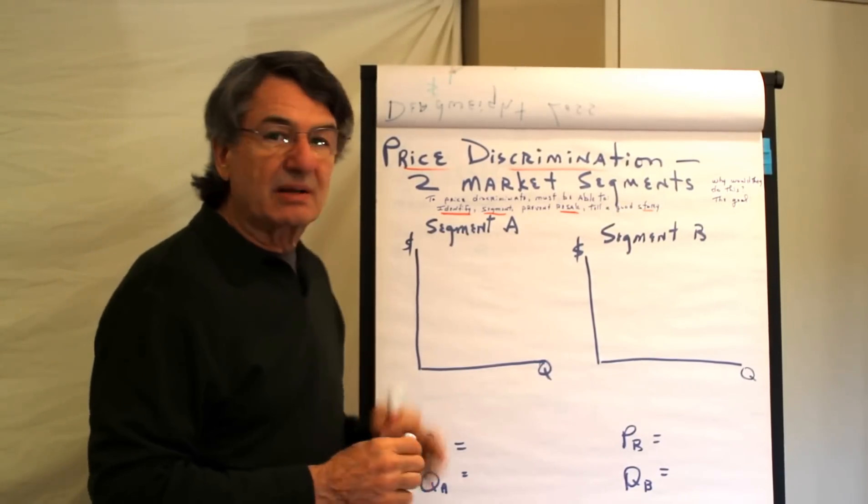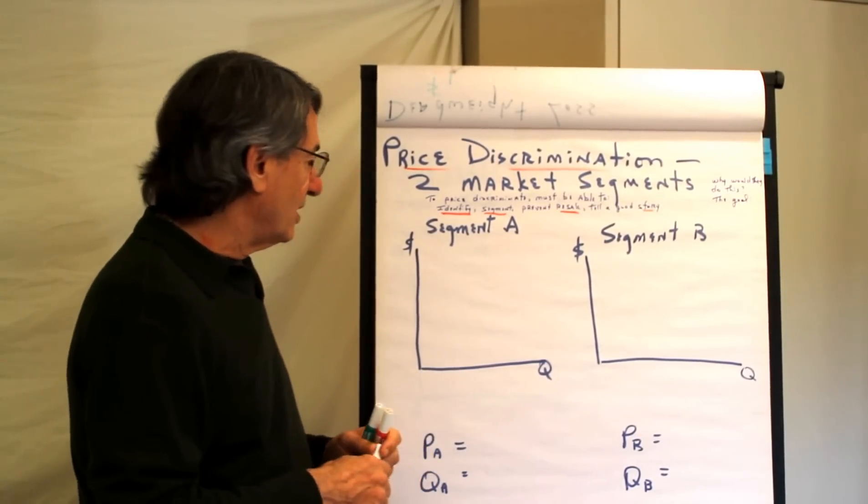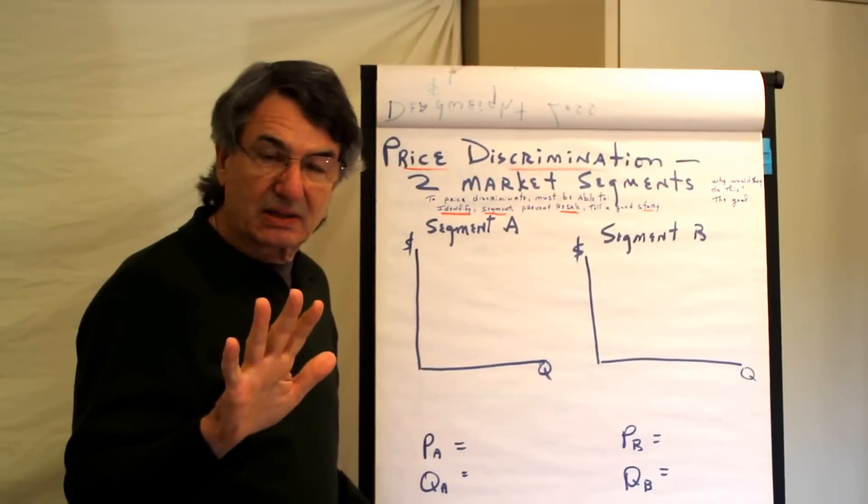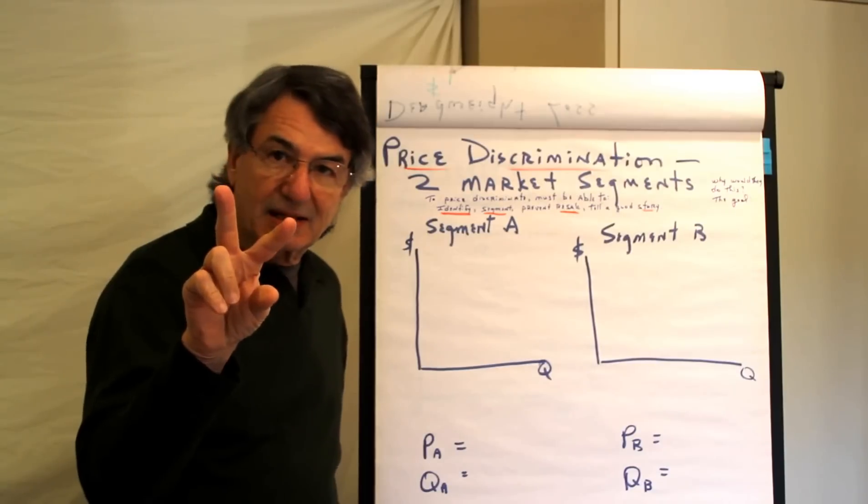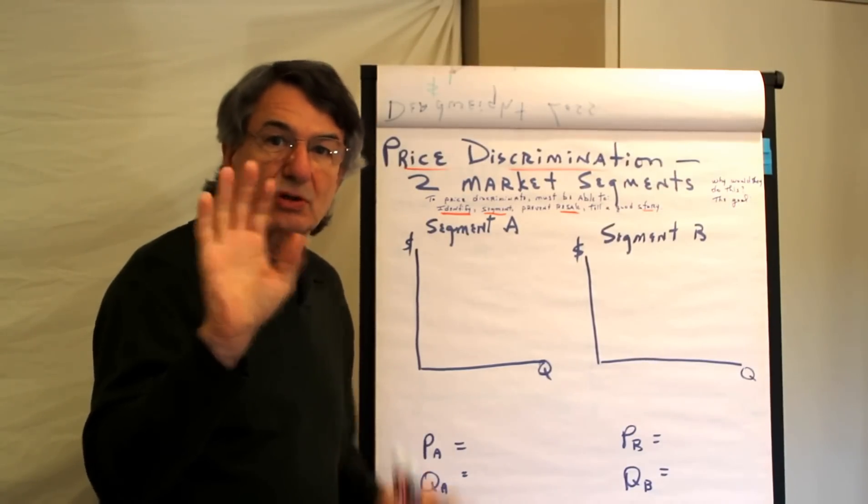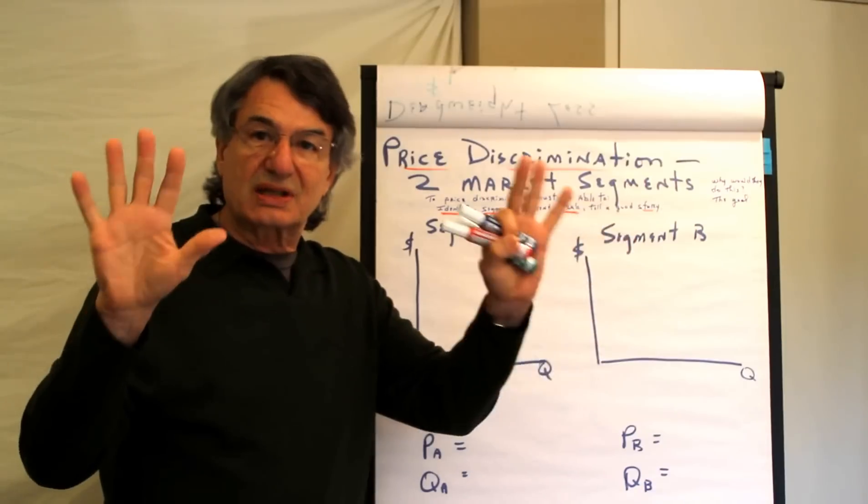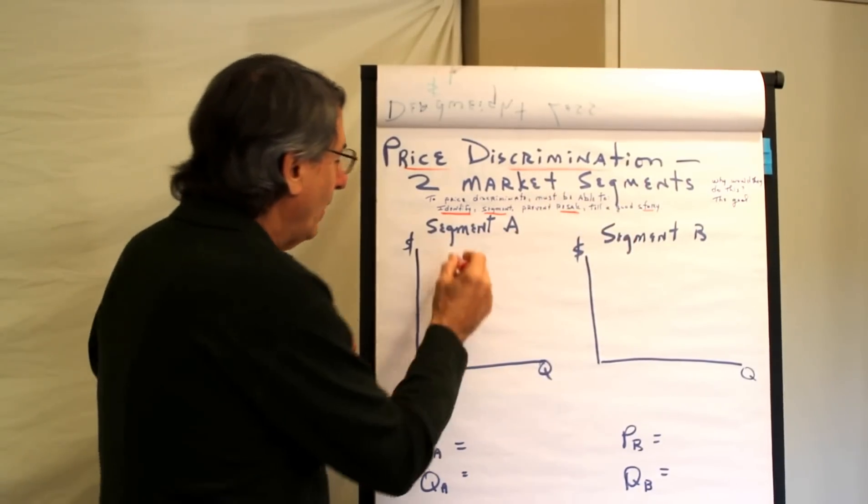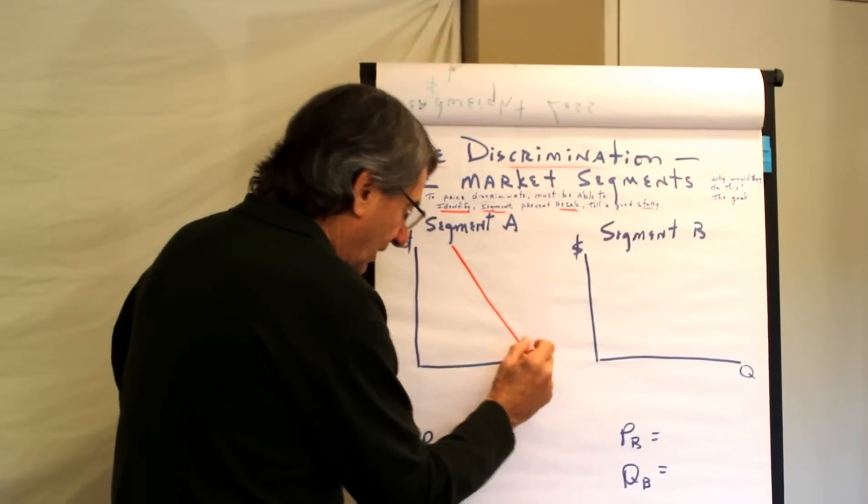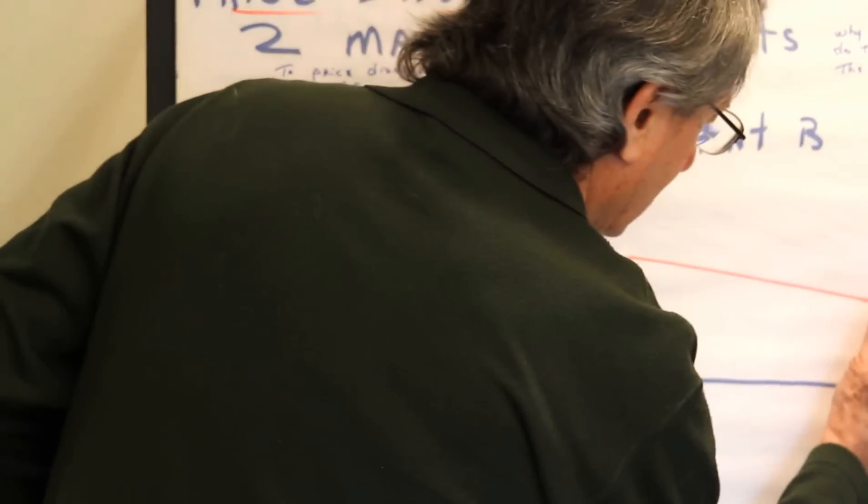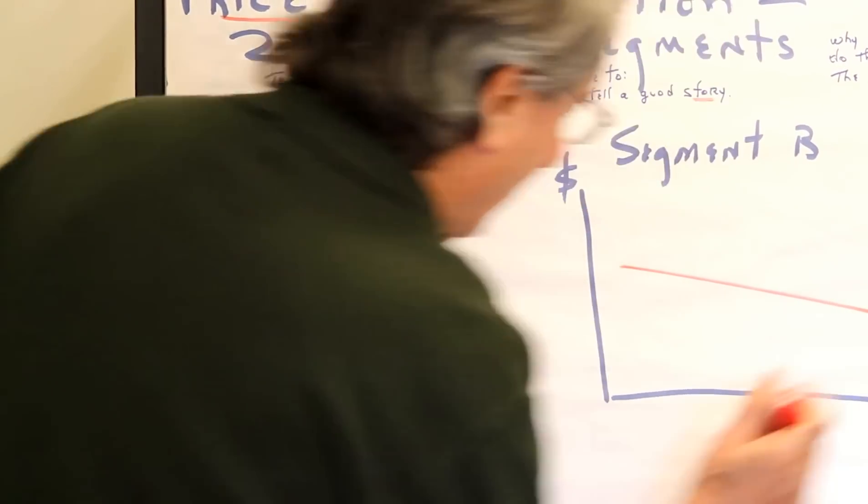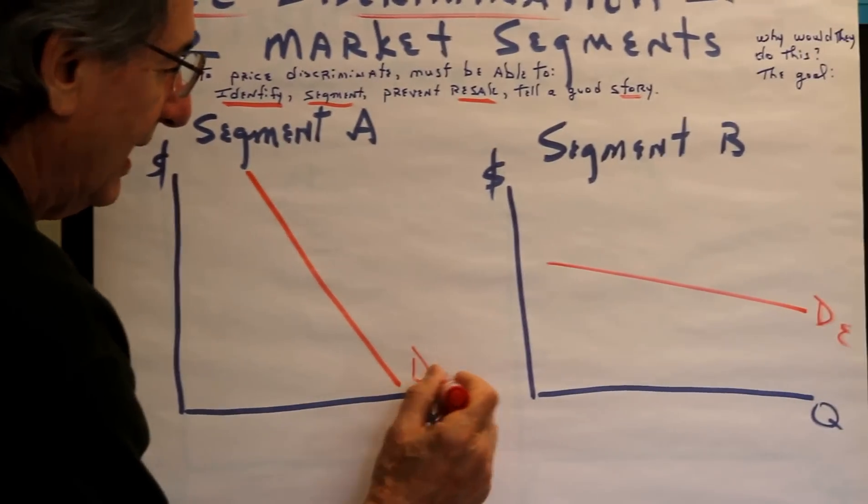But, in another video we talked about perfect price discrimination where we charge everybody the highest price they're willing to pay based on their elasticity of demand. In this one we're going to talk about a different type of price discrimination where you just divide your market into two separate segments. One has a demand curve that is quite inelastic and the other, their demand is quite elastic. So, there's the demand elastic, there's the demand inelastic group.